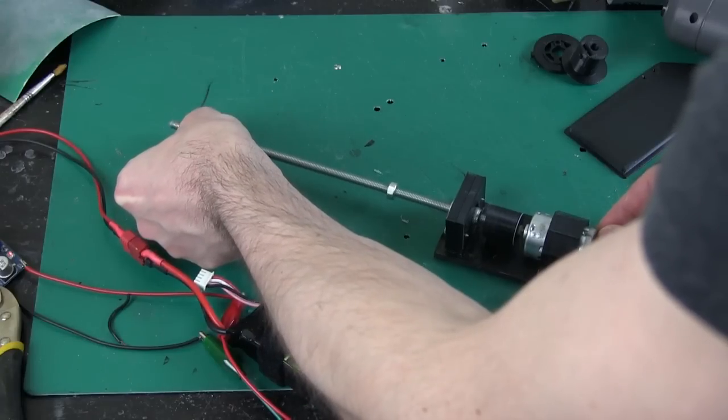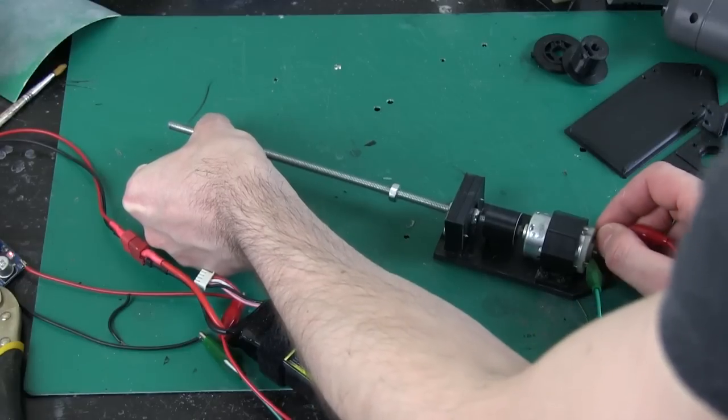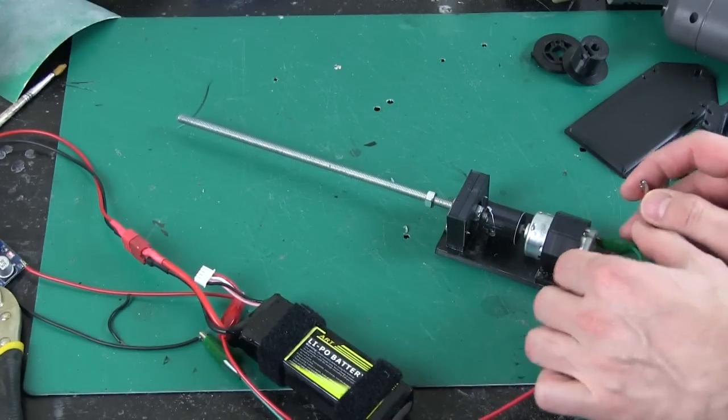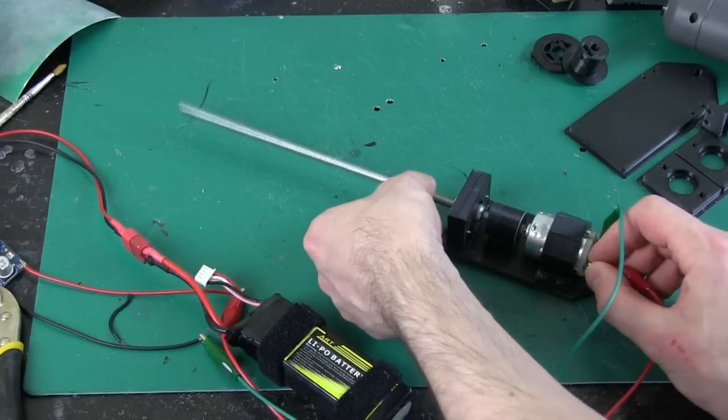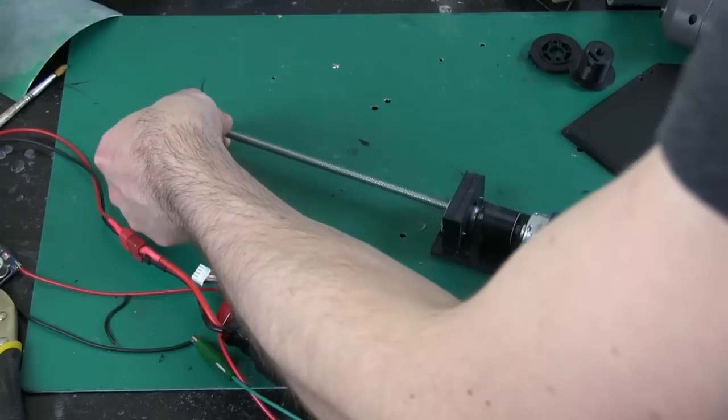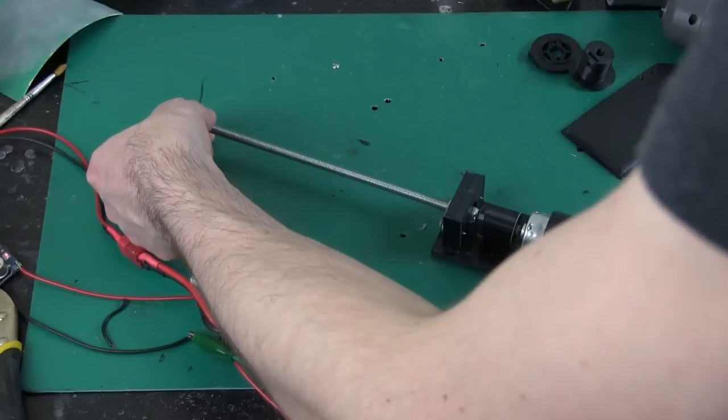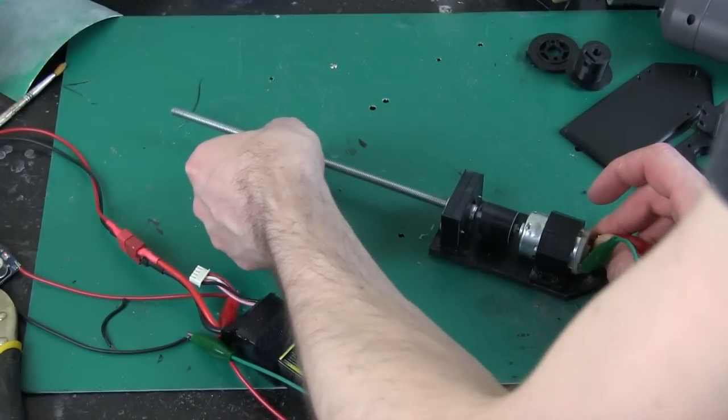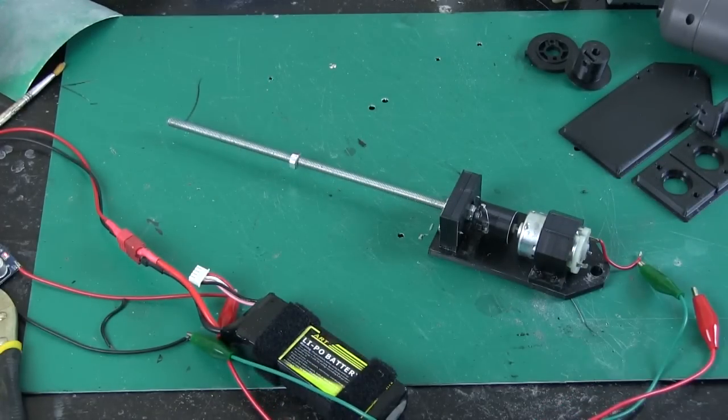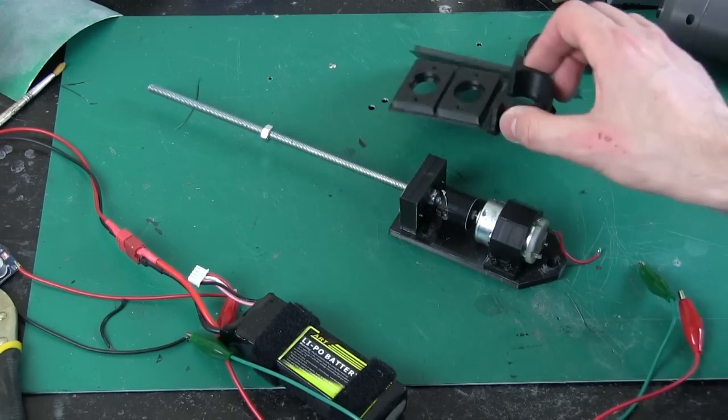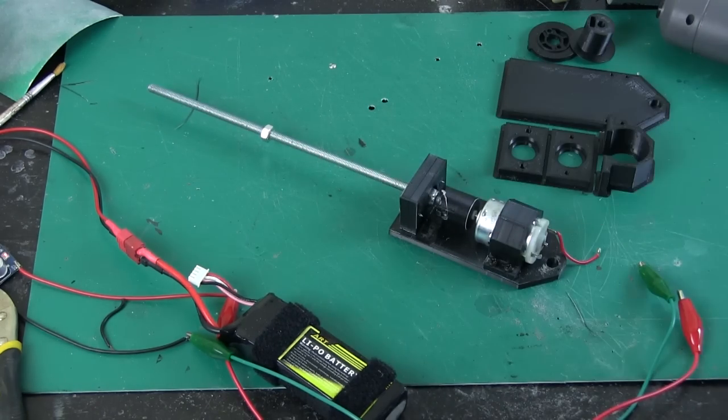It does move the nut quite quickly, but not as quick as I'd like. I can stop it quite easily, which is a concern because it depends on the weight of the weapon I'm going to put on there, and whether the mechanism gets jammed or stuck. So I'm not very happy with this. I had printed parts for two of them, but I think I'm going to come up with something else.